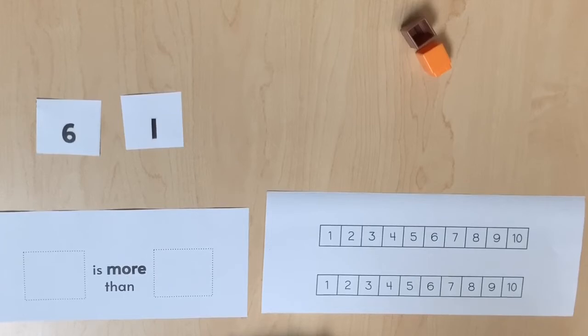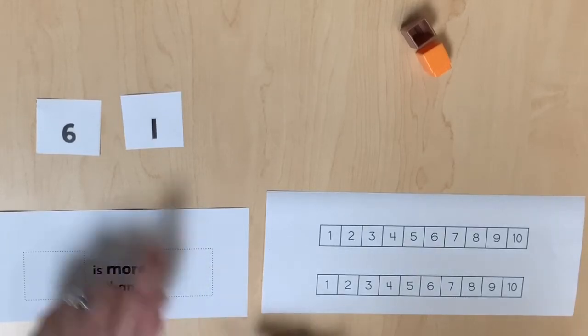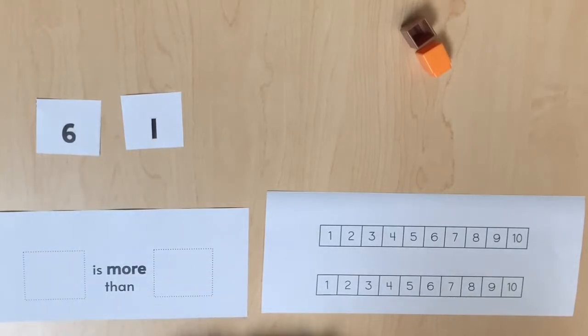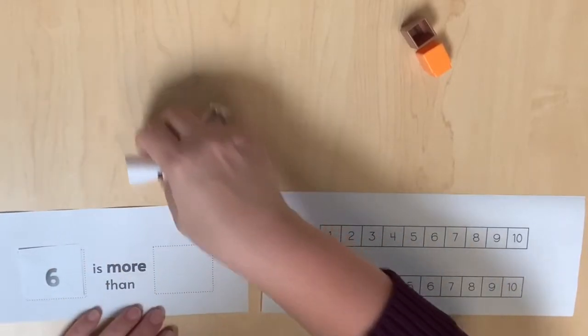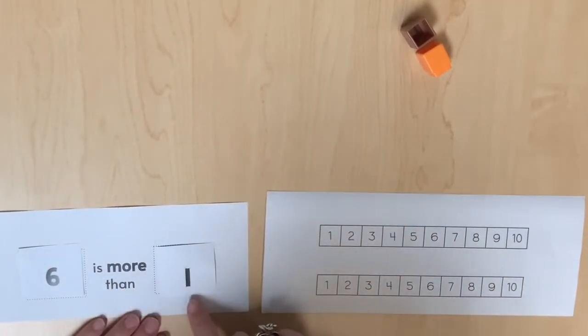The most abstract representation of quantities is the number only. We can use comparison mats to compare two numbers such as six and one. Six is more than one.